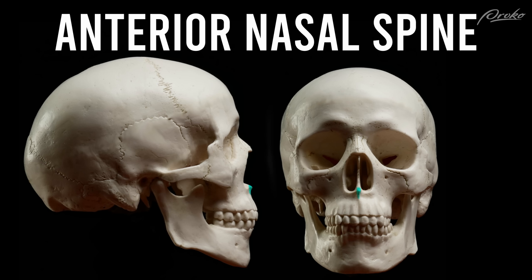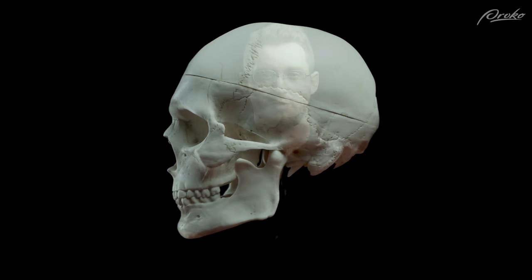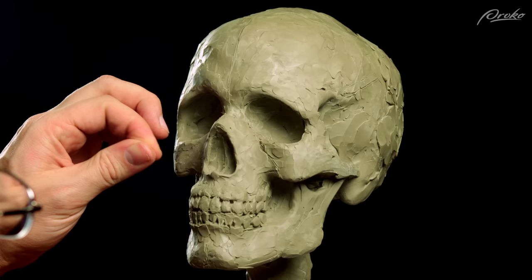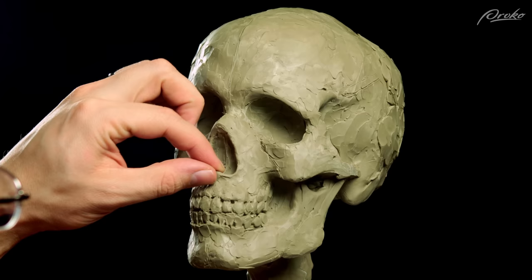The fourth feature is the anterior nasal spine of the maxilla. This is the tiny bump where the cartilage of your nose attaches to the skull. You can feel it on yourself — that bump right at the bottom of your nose is the anterior nasal spine of the maxilla. On the skull, it gives us a clear indication of where the bottom of the nose is located. When sculpting the skull in clay, I like to take a little piece of clay and put it right there on the anterior nasal spine to give me an indication of where the bottom of the nose should be.